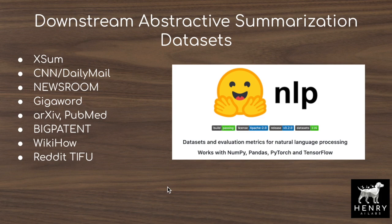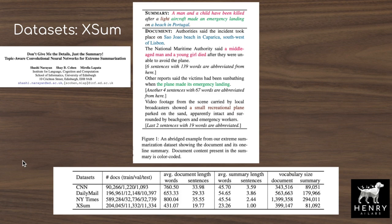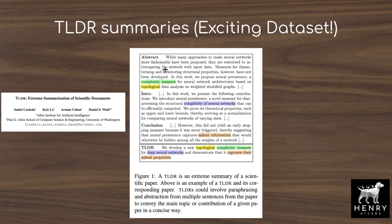Pegasus is pre-trained on HugeNews and then fine-tuned on various summarization datasets including XSum, CNN/Daily Mail, Newsroom, Gigaword, arXiv, PubMed, BigPatent, WikiHow, and Reddit TIFU. The TLDR dataset from the Allen Institute uses TLDR summaries of abstracts, introductions, and conclusions of machine learning papers on OpenReview. These datasets vary enormously in number of samples and compression ratio—from full scientific papers to very short target summaries.